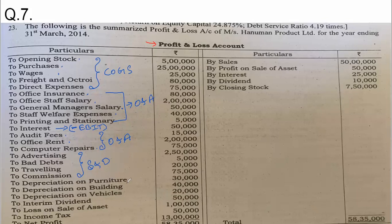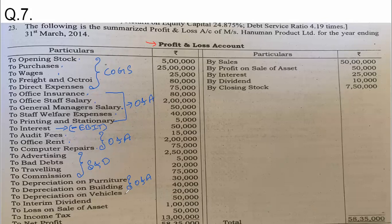Depreciation on furniture, depreciation on building, and depreciation on vehicles are given. It is not clear whether these are for the office or the factory. Furniture and building depreciation we can consider under office and administrative expense. But vehicles are generally used for sales purposes, so we can assume depreciation on vehicles as selling and distribution expense.